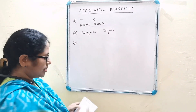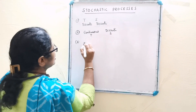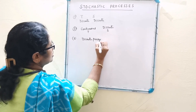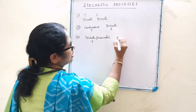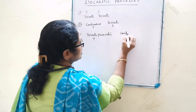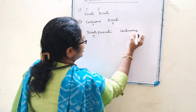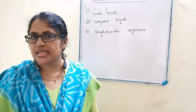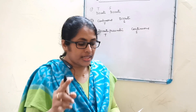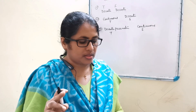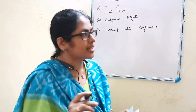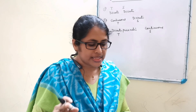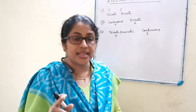The third type is discrete parameter, continuous process — that is, T is discrete and S is continuous. For example, let x(n) denote the maximum temperature in a city on the nth day. Another example: let x(n) denote the life length of the nth renewed bulb.